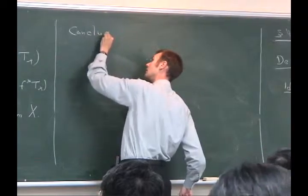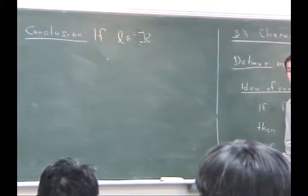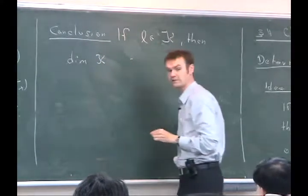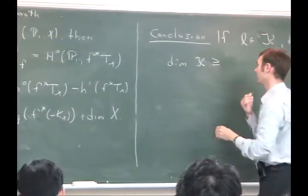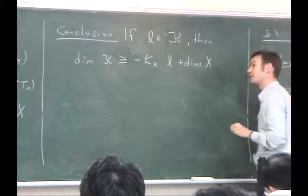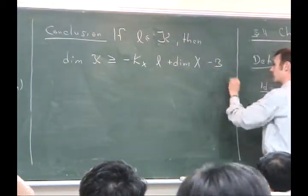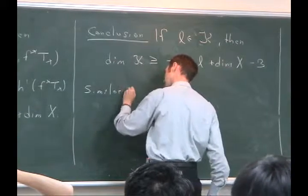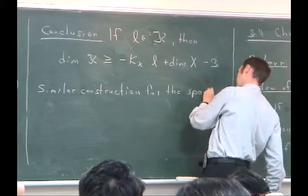Conclusion: if L is a minimal degree rational curve on X, then the dimension of the space is bigger or equal to the intersection number (-KX · L) plus the dimension of X minus the dimension of PSL2 — which we mod out — that is, minus 3. We have a similar construction for the space of curves that contain a point x.